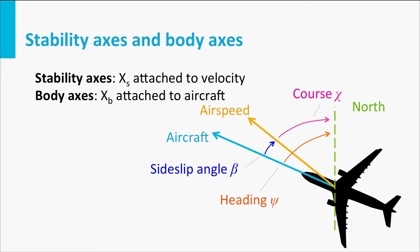Here we also have an inertial reference — in this case, true north. This means that our course is the angle between the speed and the north direction, whereas our heading is the angle between the body axis and the north. If there is a sideslip, then they differ, and from this figure you can see that the heading is basically the sum of the sideslip plus the course. We have defined the sideslip such that when the air is coming from the right starboard side, from the aircraft's perspective, we have a positive sideslip angle beta.